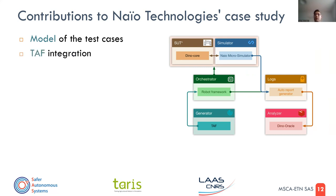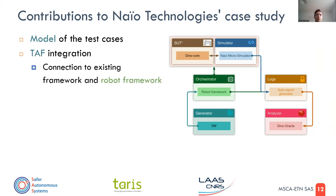We then integrated TAF's generation and connected it to the existing framework of the company and also to Robot Framework — shown in the light green box. Robot Framework is a framework that helps manage other modules. In this case, it was launching the simulator and the robot software, putting them in contact, and providing a partial online oracle while recording some logs.